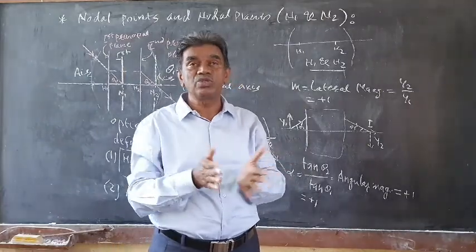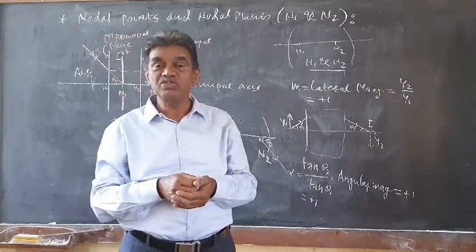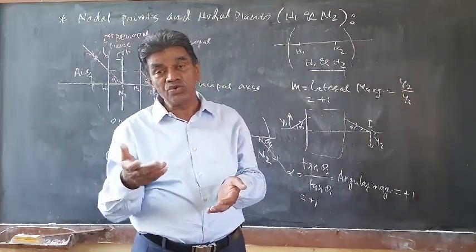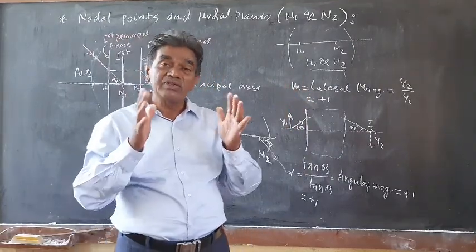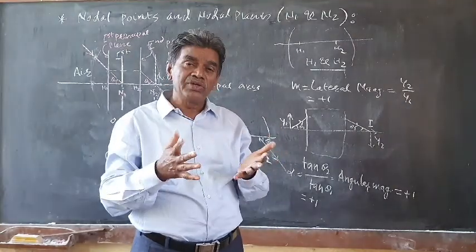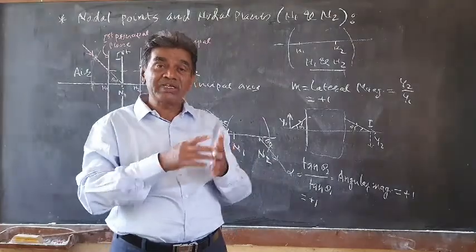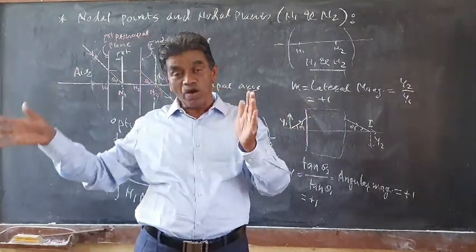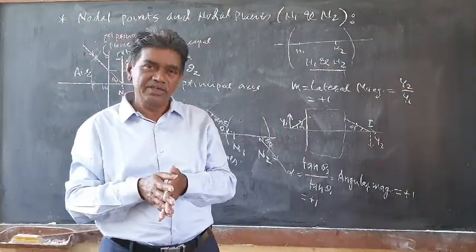So over the last two or three lectures we have seen what the cardinal points are. There are six cardinal points — three pairs: F1F2, H1H2, and N1N2. We have seen the definitions of all of them, and from the concept of cardinal points we can construct the image of any object placed on the axis. How the image can be constructed we will see in the next lecture.